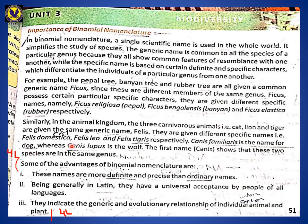Similarly in the animal kingdom, three carnivorous meat-eating animals — cat, lion, and tiger — share the generic name Felis. They are named Felis domestica, Felis leo, and Felis tigris respectively. They belong to one genus because of shared characters, but their specific names are different. Similarly, dog and wolf belong to the genus Canis — Canis familiaris for dog and Canis lupus for wolf. They share some characters but also have differences, so they have different specific names but belong to the same genus, Canis.